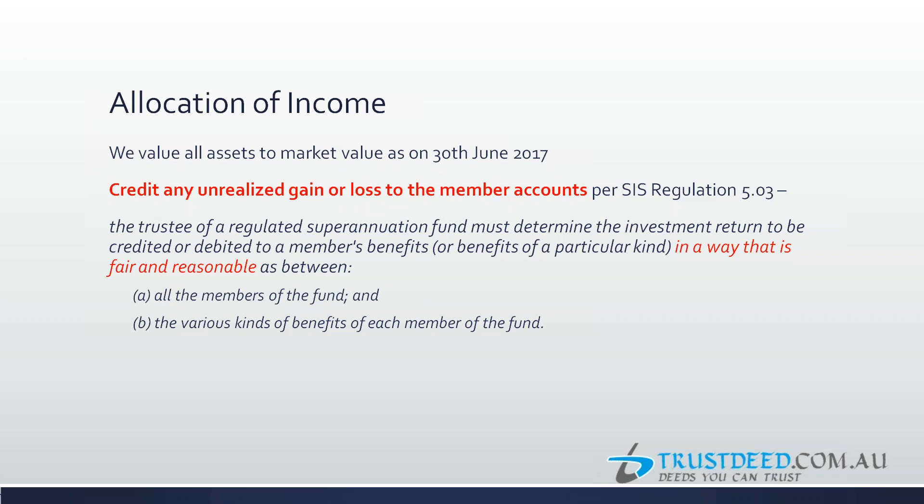Income is allocated according to the daily balance method. If there is a contribution during the year, a member would be allocated a higher amount based not only on opening balance but also the number of days the new contributions have remained in the fund. Software is also programmed so that if there is a large pension payment, the reduction in allocation is accounted for, since a reduced pension balance receives proportionally less income for the year.